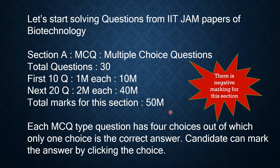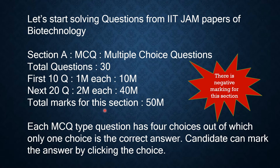Today the question we are going to have is from MCQ type of question — a multiple choice question. Total questions in this section are 30 questions. This is Section A from the IIT JAM examination. Here the first 10 questions are for one mark, so 10 marks for the first 10 questions. The next 20 questions are for two marks each, so 40 marks for those 20 questions. In all, there will be 50 marks for Section A from the MCQ type questions.